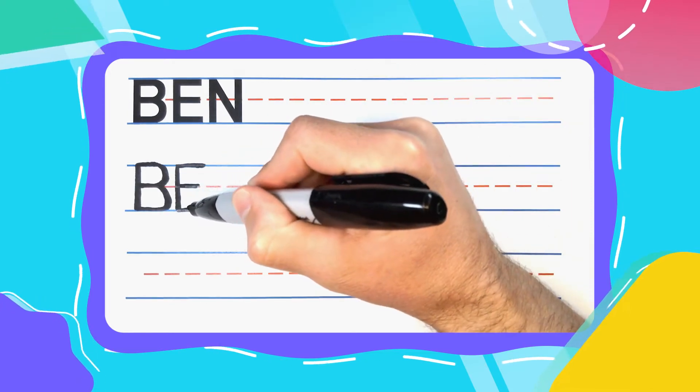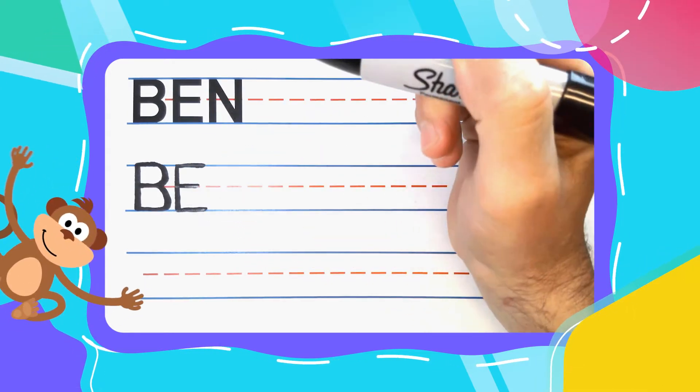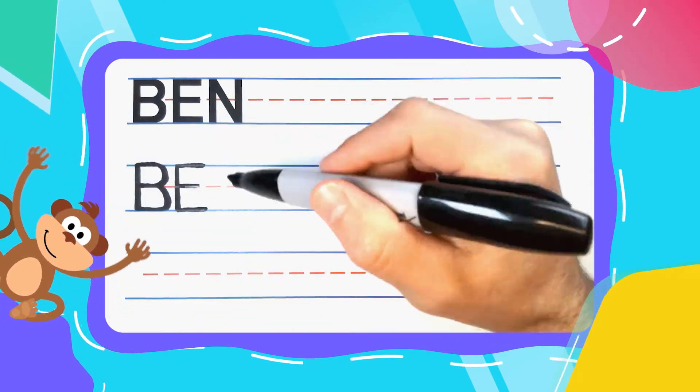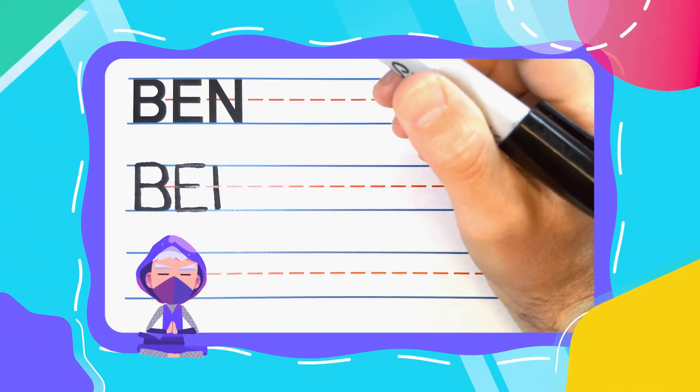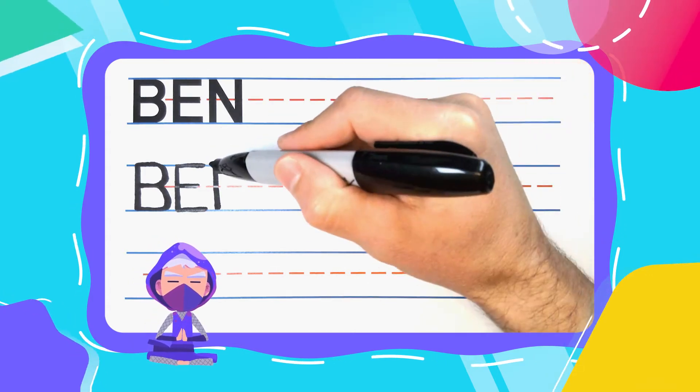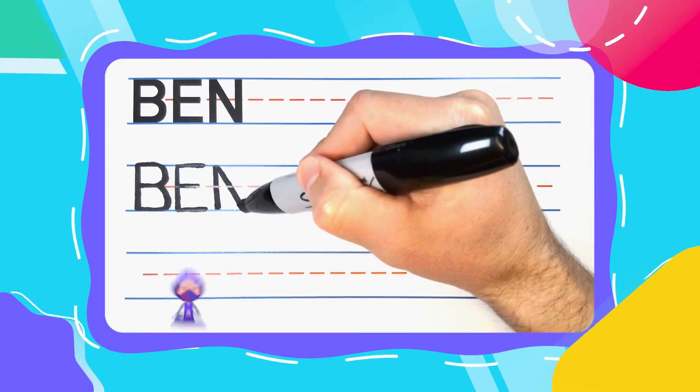and at the bottom you're going to do another big one. And the last letter in Ben, friends, is the ninja N. Ninja Ns start with a straight line down, come back to the top, diagonal down to the